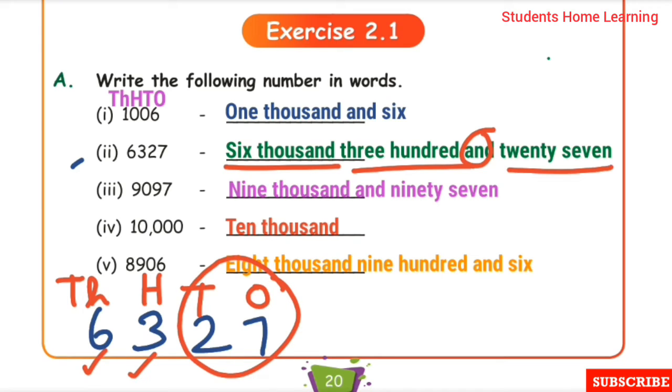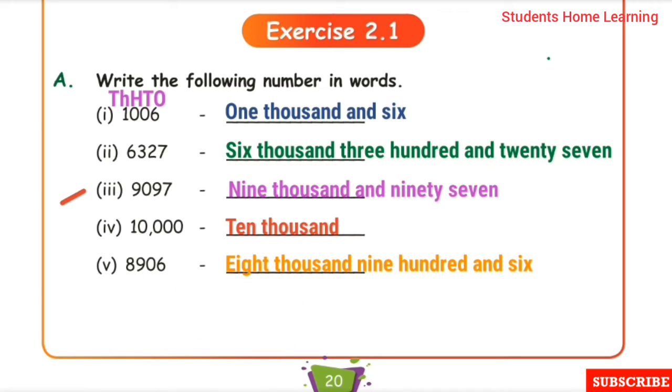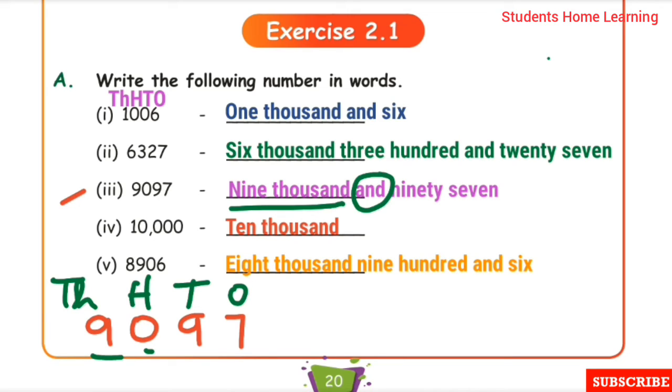Next one: 9,097. Place value: ones, tens, hundreds, thousands. Thousands place: 9,000. Hundreds place: 0. Tens and ones place: 97. The answer is nine thousand and ninety seven.